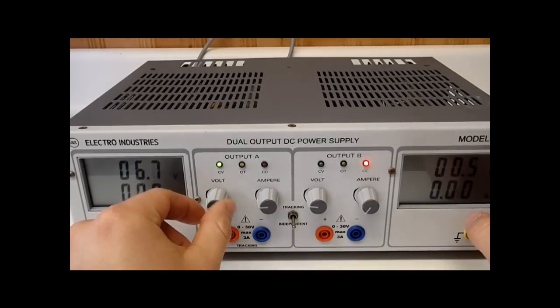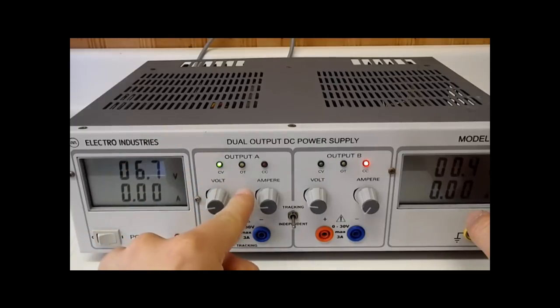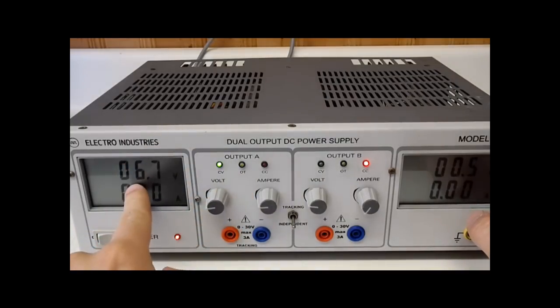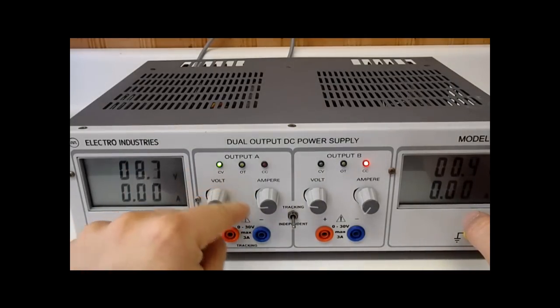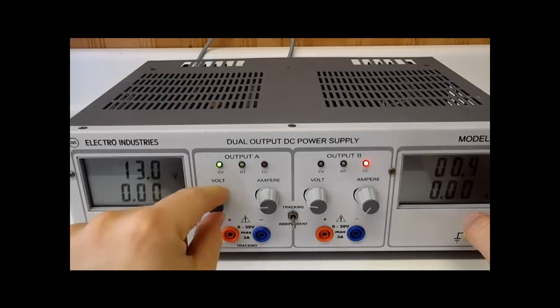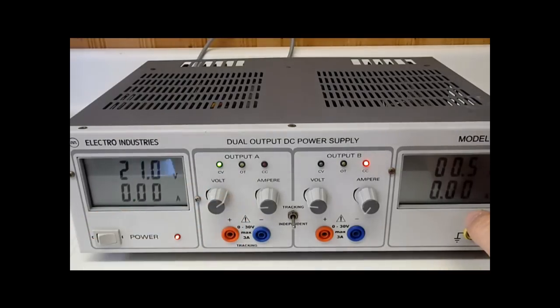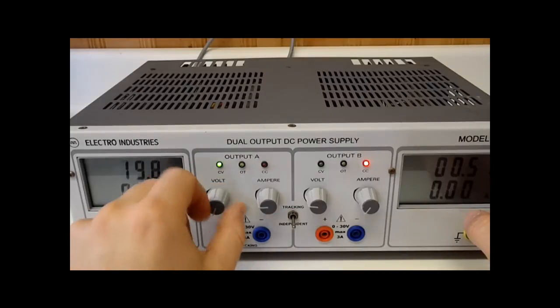Now the next thing I would suggest is instead of having a coarse and a fine adjustment for tuning your voltages, I would recommend having a multi-turned potentiometer. This one right here is a 10 turn pot so it really allows you to finely tune your voltage to what you need it to be. So that's a really nice feature.